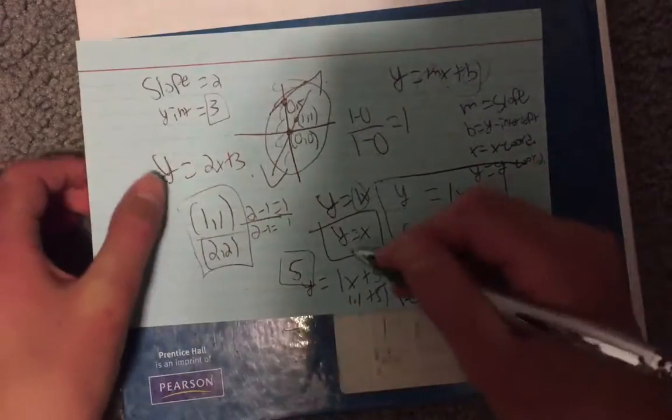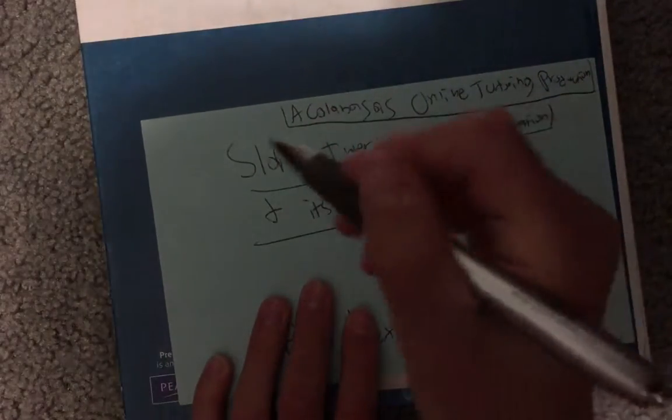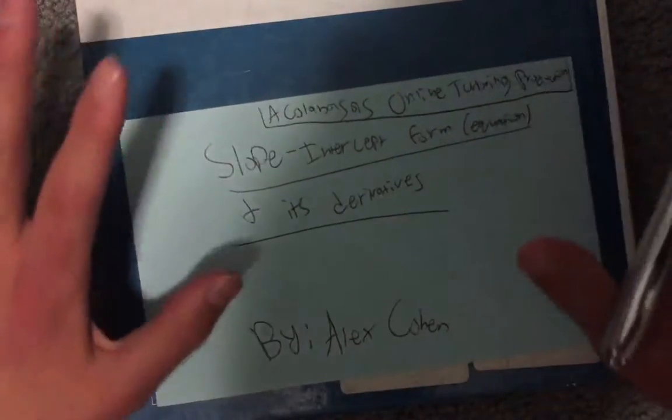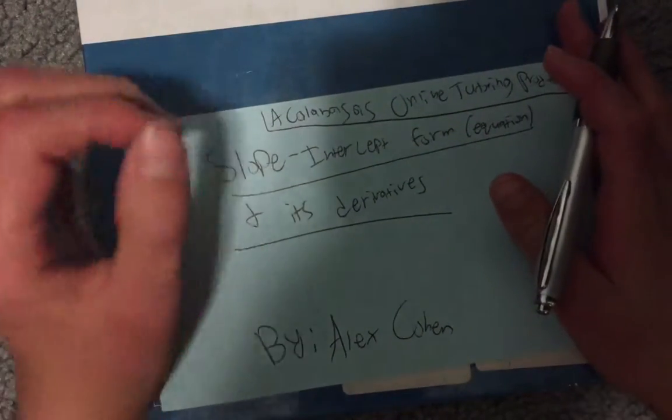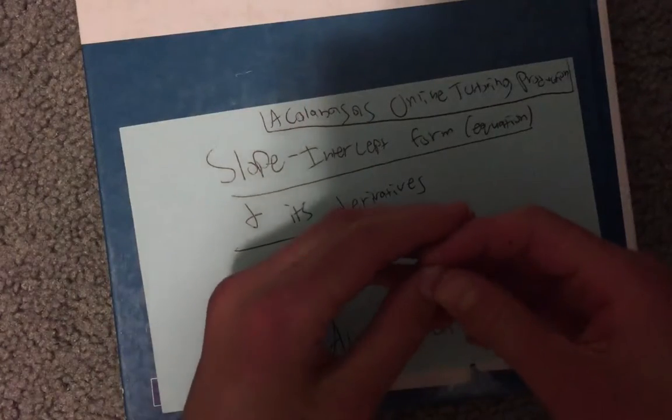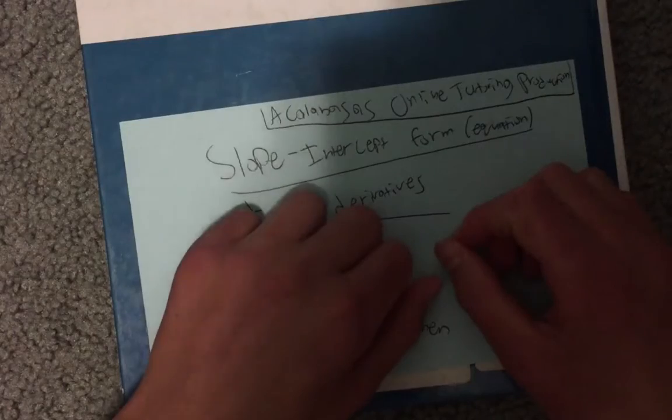And that is known as slope-intercept form. Right here, as that was its lesson today. Slope-intercept form, its equation, and its derivatives. Please check back for more recent videos. We'll try to upload as many as we can and as quick as possible. And if you have any recommendations for any videos, anything troubling you, we're all here to help. So check back next time for some more videos. And peace!